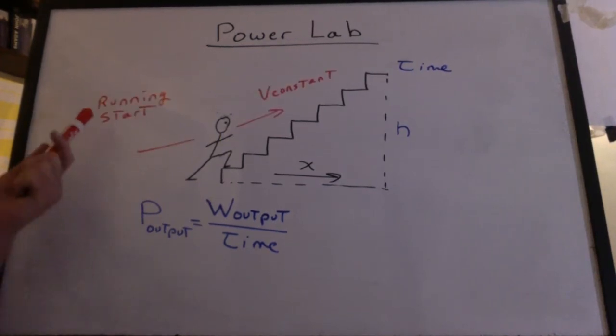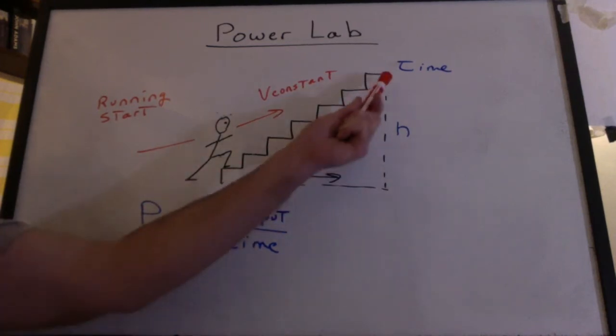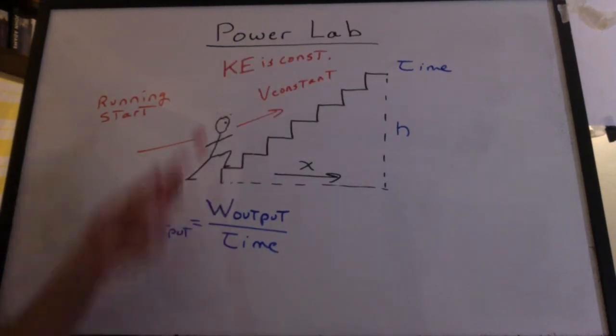I always think it's a good idea to get a running start before you get to the stairs. The stopwatch starts when you get to the stairs, and then you stop the stopwatch at the top, and you try to maintain a constant velocity. If you can maintain a constant kinetic energy, then the output of your work is going into potential energy, not the kinetic energy.